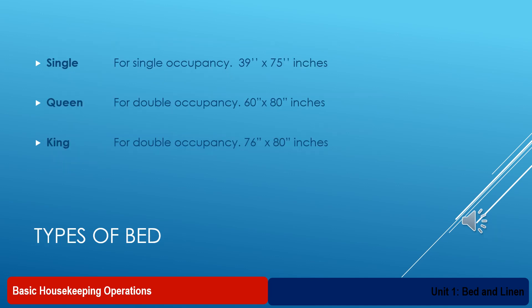We will discuss about types of bed with their sizes. We have different types of bed with different sizes. Number one, single bed — it is basically placed in a single occupancy room, and the size of the bed is 39 inches by 75 inches. The second category is queen size bed — these are placed in double occupancy rooms, basically in suite rooms. This is the second largest bed found in a guest room, and the size is 60 inches by 80 inches. Next is king size bed — this is the largest size bed available in a hotel. These are placed in suite rooms, double suite rooms, and residential suite rooms, and the size is 76 inches by 80 inches.